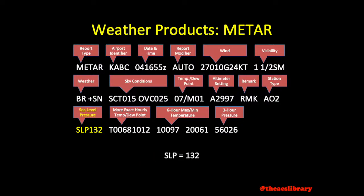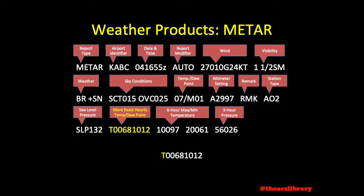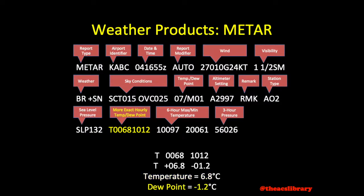To decode the sea level pressure, simply put a 10 in front of the value and then divide by 10, or in other words, add a decimal point in front of the last digit. In our example, we have 1013.2 millibars. Hourly temperature and dew point identified by the T is broken down as follows: divide the eight digits into two groups of four. The first digit of both groups will either be a zero or a one — a zero depicts a positive number, while a one is a negative number. The following three digits are the tens, ones, and tenths of temperature in Celsius. In our example, the temperature is positive 6.8 degrees Celsius, while the dew point is negative 1.2 degrees Celsius.